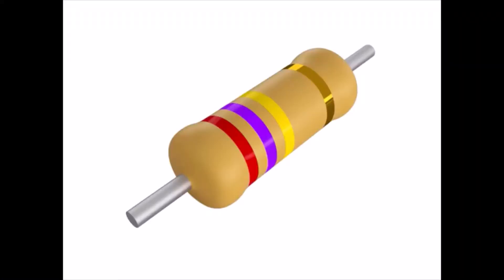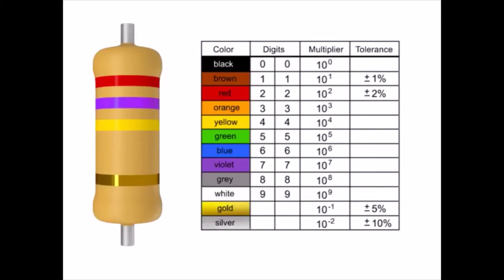Resistors are color coded with markings or bands that allow you to quickly identify resistance values and tolerance. Using a color chart table will allow you to determine the value of any common 4-band resistor. Memorizing this color chart will enable you to become proficient at quickly decoding and using resistors.